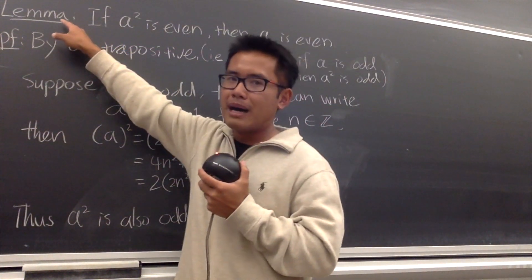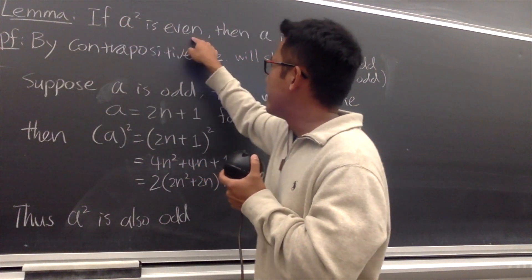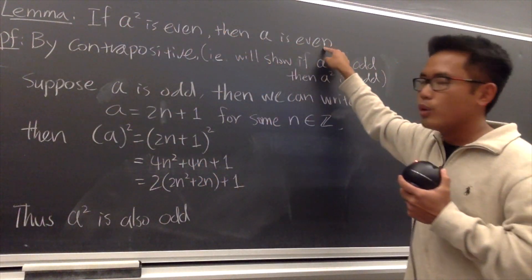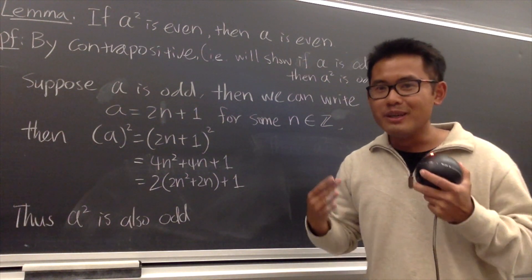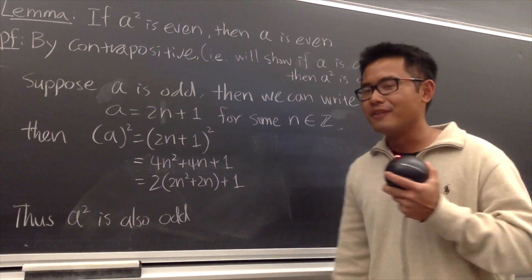Here is the lemma. If a squared is even, then a is also even. And I will go over the proof by contrapositive for you guys.